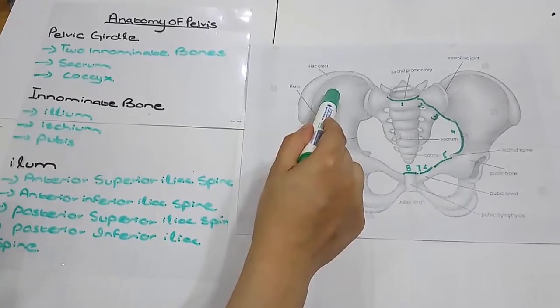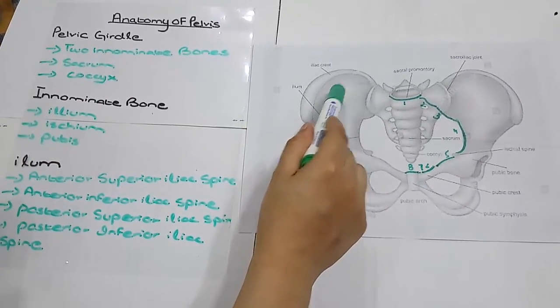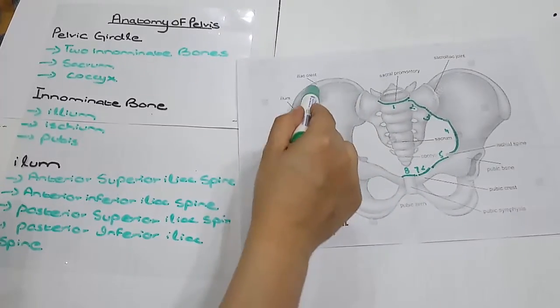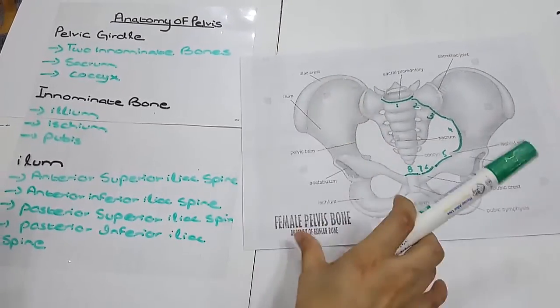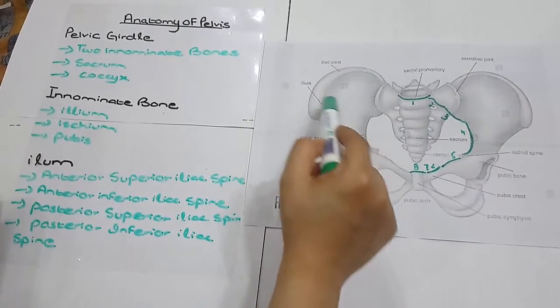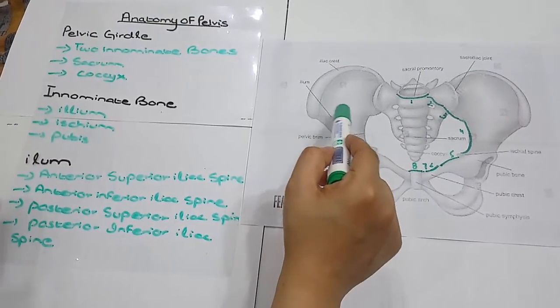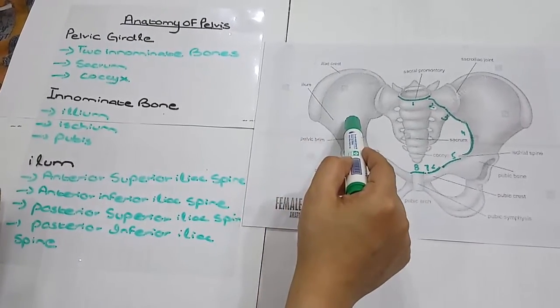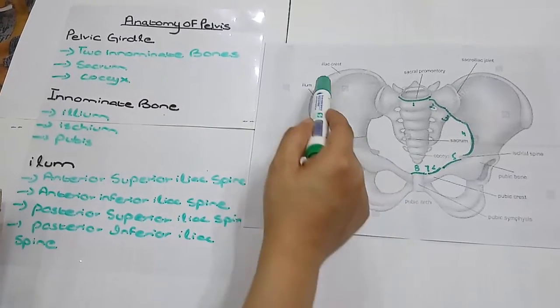Now what is ileum? This ileum has a flared out part, you could see. This is called the ileum crest. The internal concave anterior surface of the ileum is known as the ileum fossa.